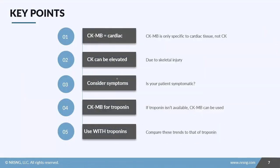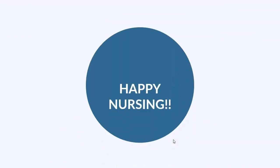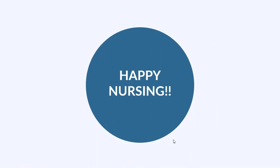To recap: CK-MB is the specific marker we look at for cardiac tissue — not just CK alone, since CK can be elevated from skeletal injury as well. Always consider your patient's symptoms. CK-MB can be used when troponin isn't available, and you'll want to use CK-MB alongside troponins to compare trends over time. That's our lesson on cardiac markers — make sure you check out all the resources attached to this lesson. Go out and be your best selves today, and as always, happy nursing.